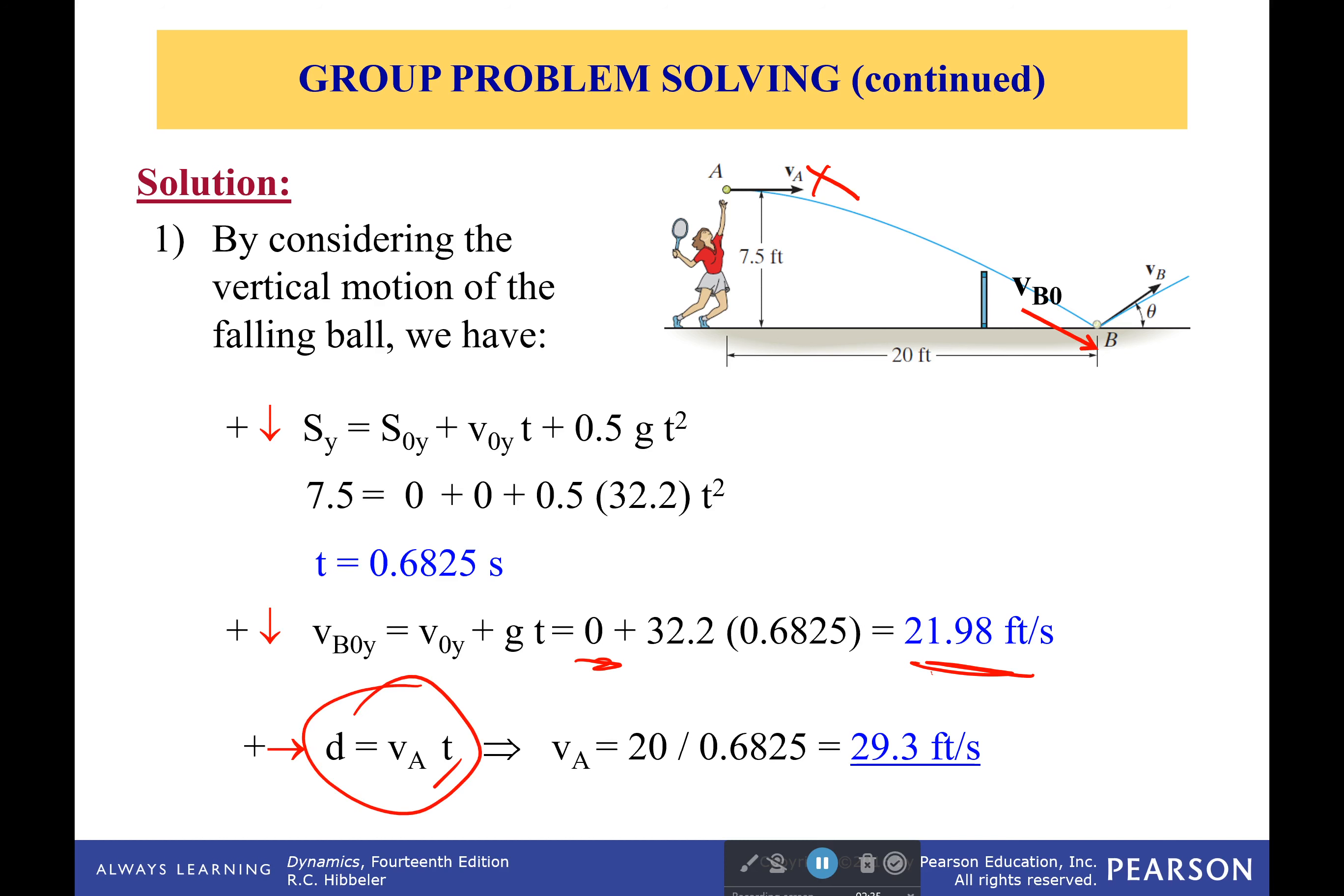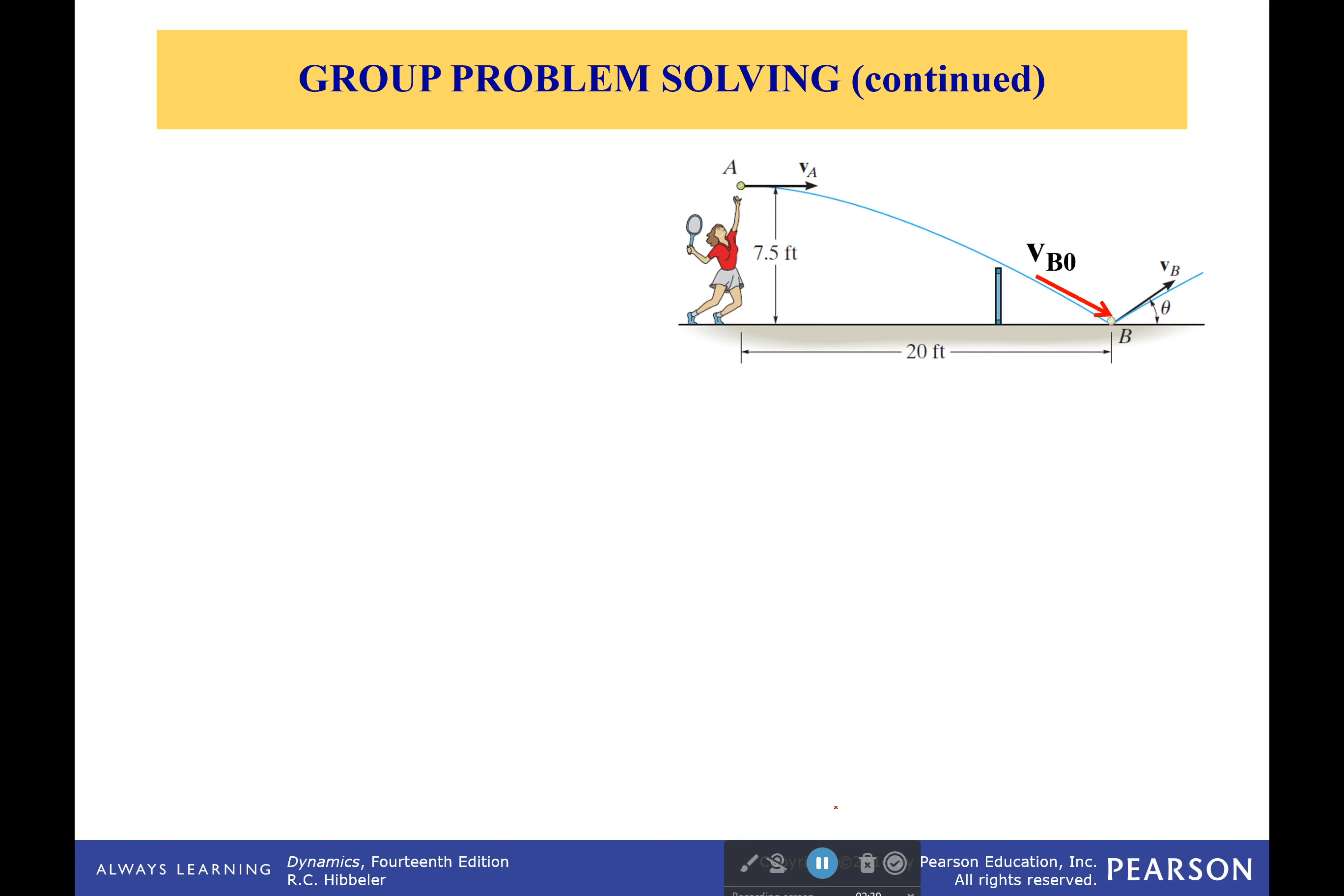And so we can use a very simple equation for it because the x velocity is constant while it's dropping. We're just ignoring air resistance. And so we get it as 29.3 feet per second.